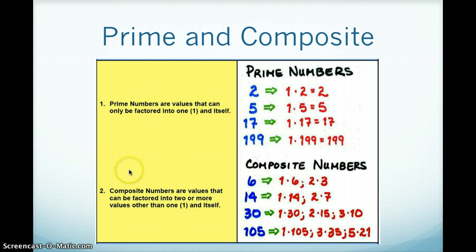So the other one is composite numbers. Composite numbers are values that can be factored into 2 or more values other than 1 and itself. So every composite number has 1 and itself, of course, and then has another number that will work as well. Such as 6, so 1 times 6 gives you 6, and 2 times 3 gives you 6. 14, so 1 times 14 gives me 14, and 2 times 7 gives you 14. So 30, and you see you've got the examples here. There's a whole lot more composite numbers, as well as prime numbers. These are just a few examples for you.